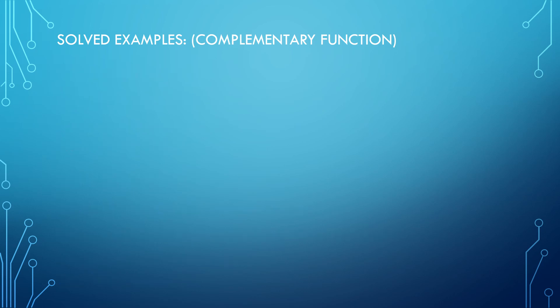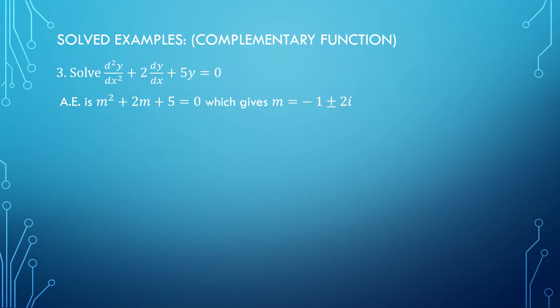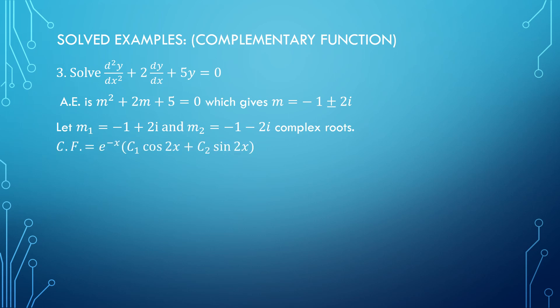Example 3: d²y/dx² + 2·dy/dx + 5y = 0. The auxiliary equation gives complex roots because the quadratic cannot be factored normally. Using the quadratic formula, m = −1 ± 2i. So a = −1 and b = 2. By Rule 3, the complementary function is y = e^(−x)·(c₁·cos(2x) + c₂·sin(2x)).